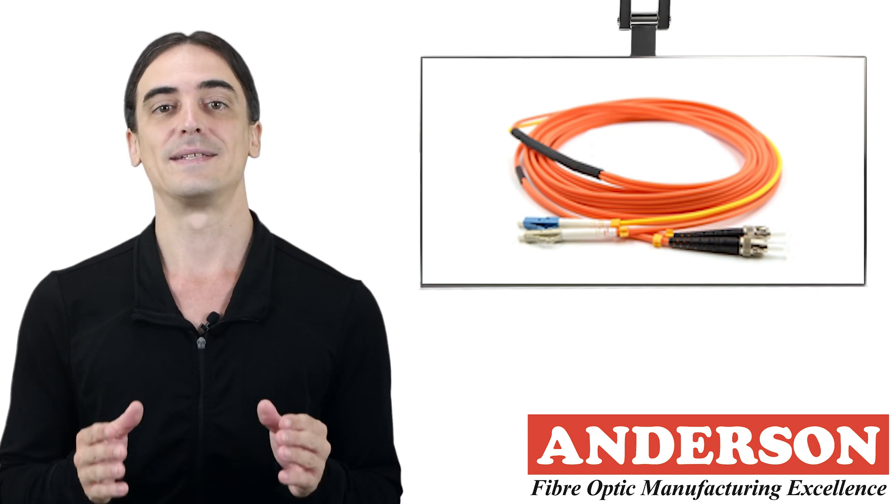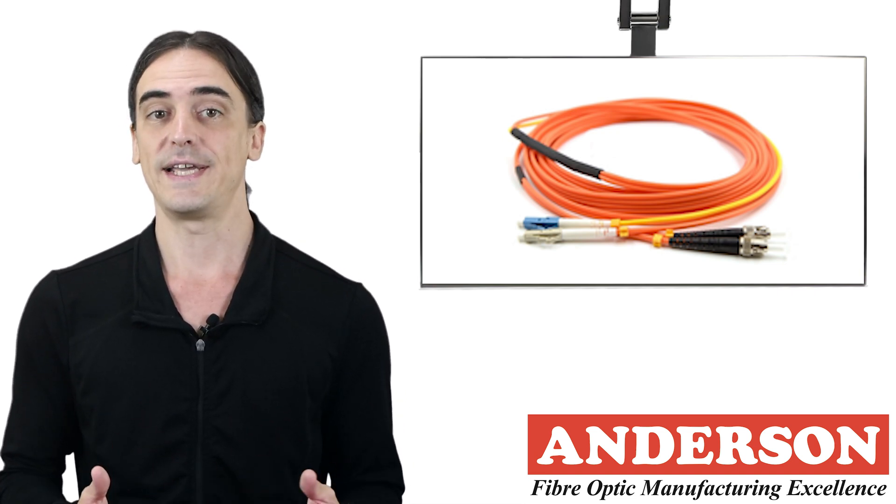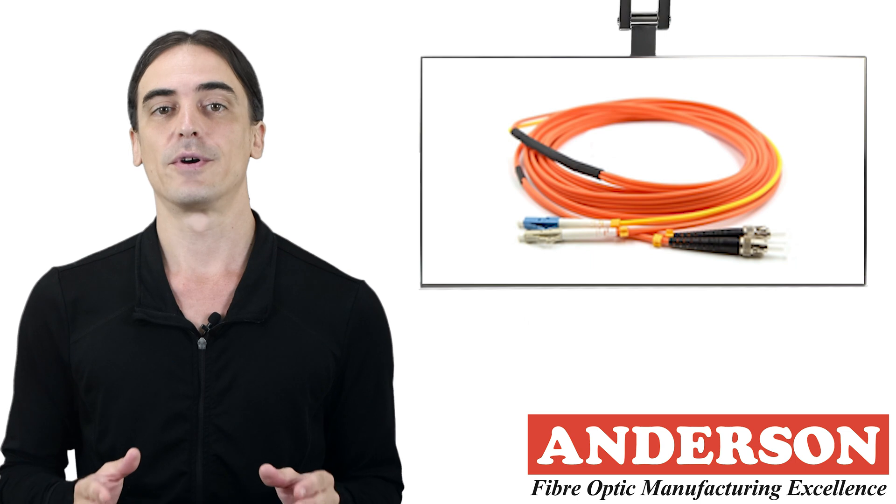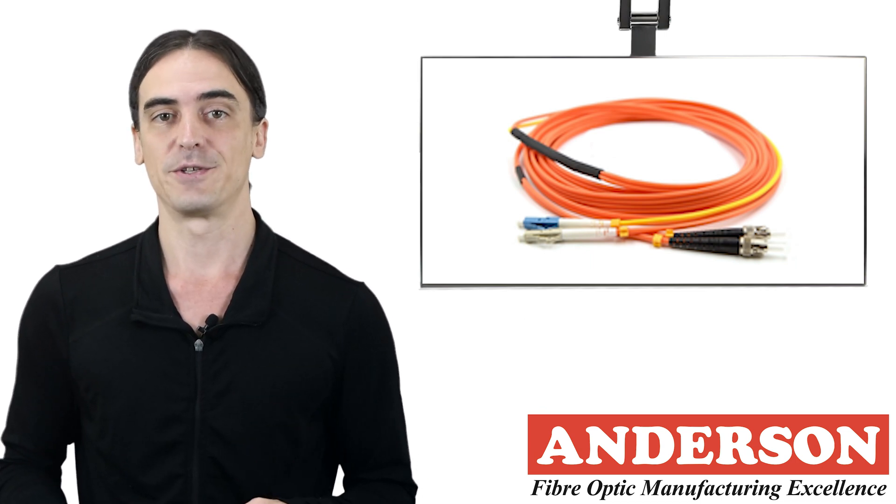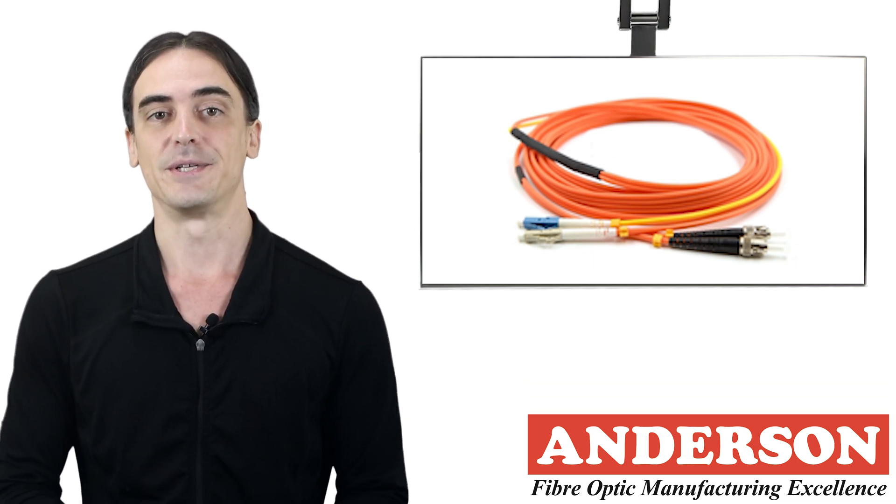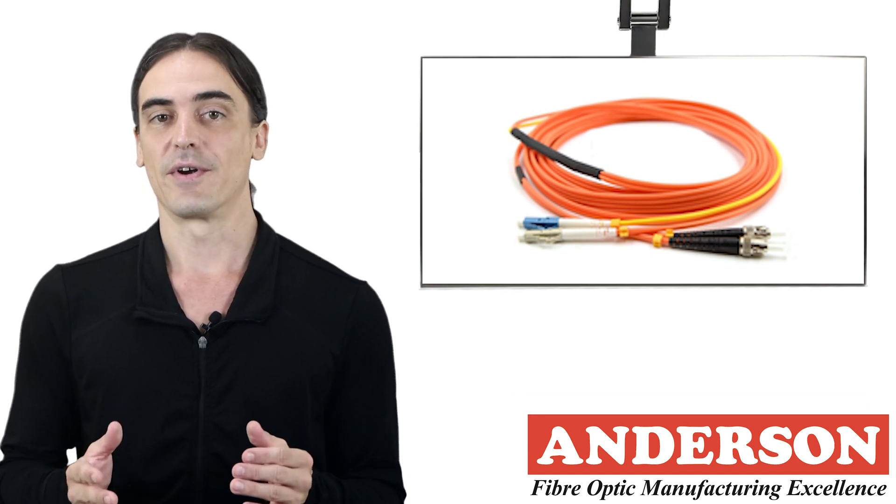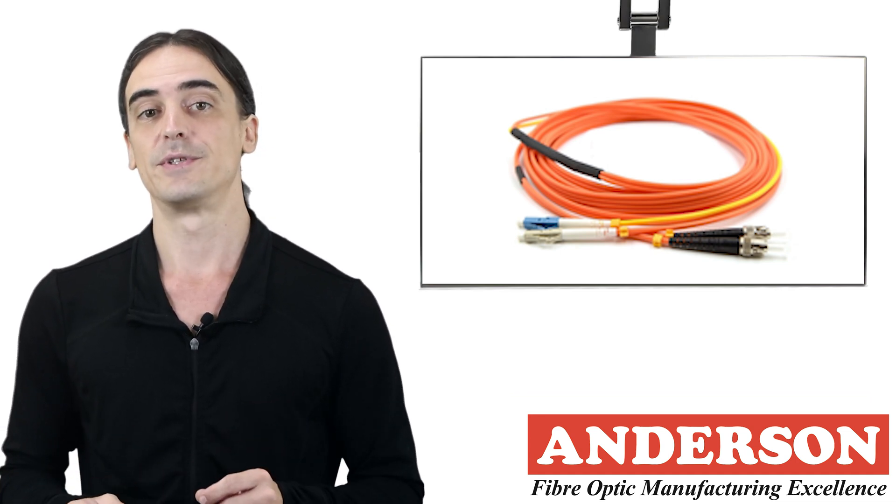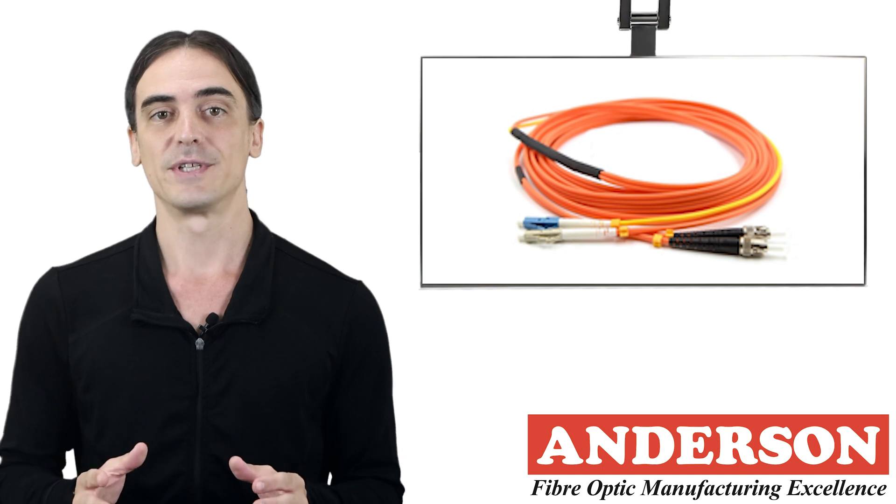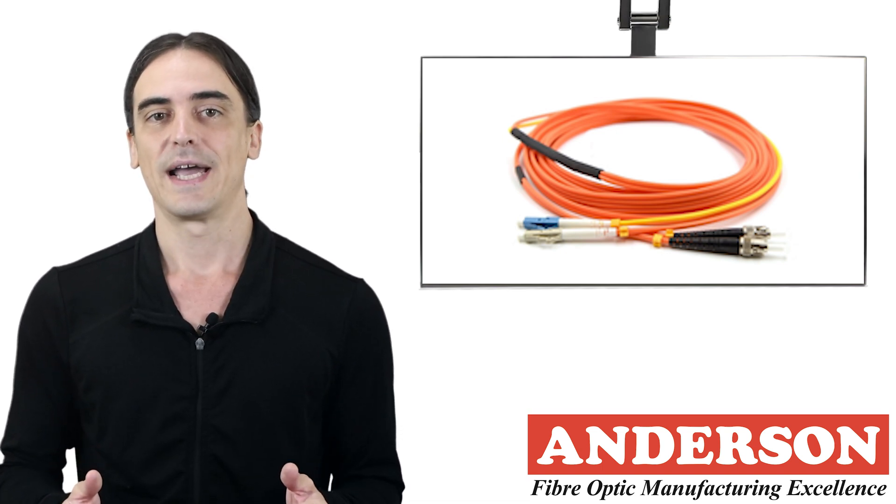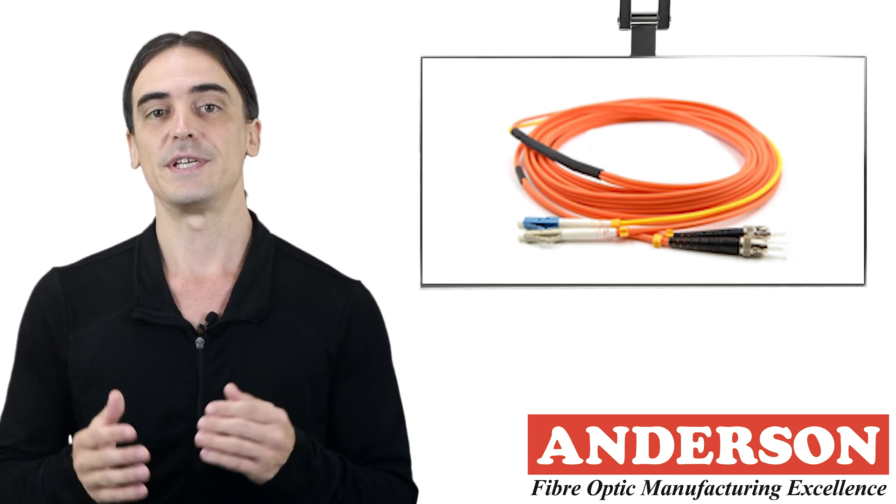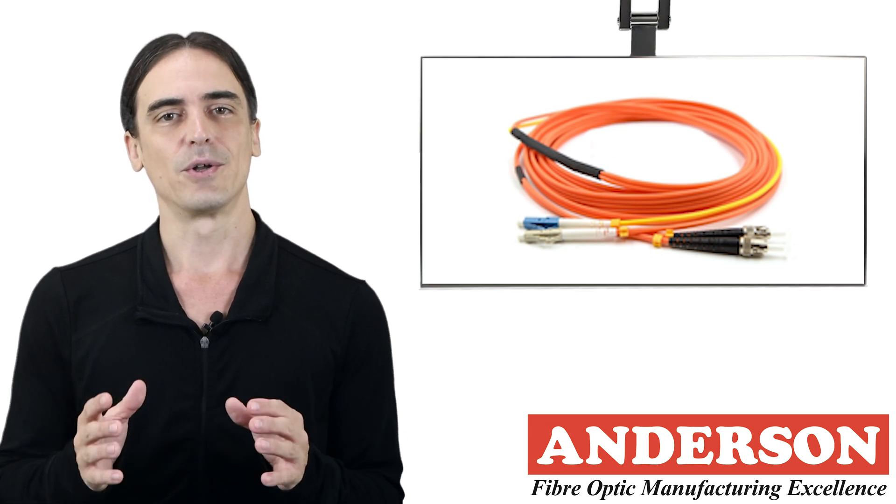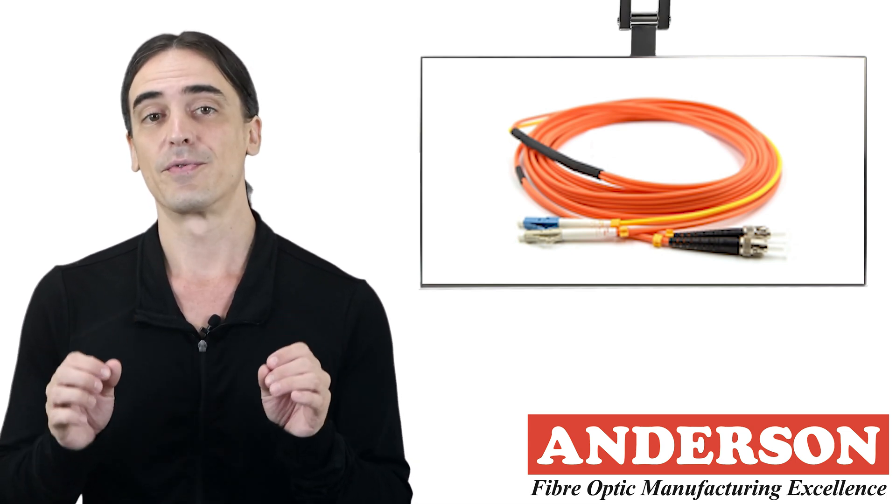This is referred to as differential mode delay, or DMD. Multi-mode cables are designed to work with LED transmitters, which stimulate many modes of transmission. Laser transmission, on the other hand, only produces a few modes. This can generate separate pulses that confuse the receiver and lead to bit errors on the receiver's side. This is a real issue with fiber lengths over 300 meters.